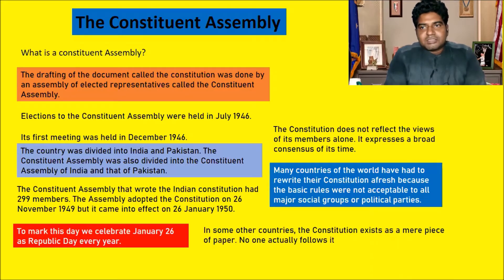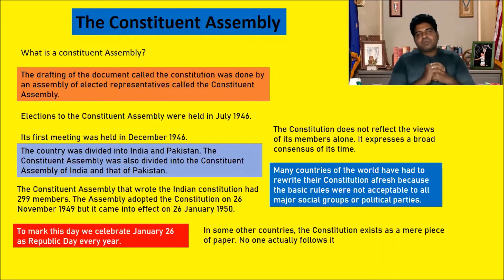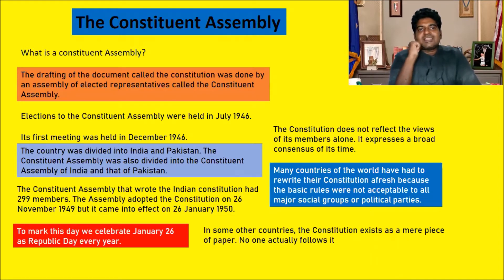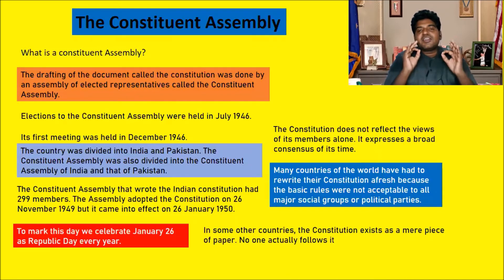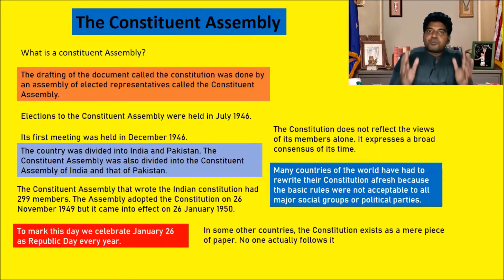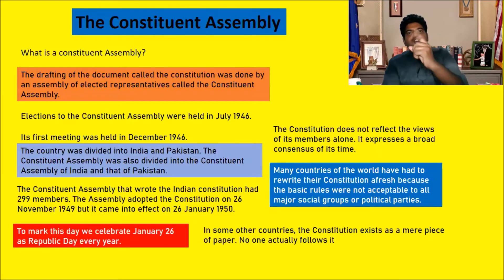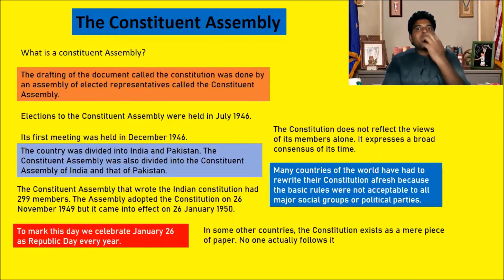Namaskar, welcome to today's concept: the Constituent Assembly. What is a Constituent Assembly? The drafting of a document called the Constitution was done by an assembly of elected representatives called the Constituent Assembly — a group of elected leaders given the task of completing a document called the Constitution, which will be the supreme authority to decide who will make the laws and how the election and voting process should happen.